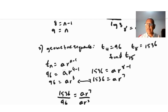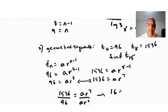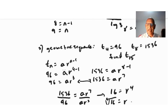The a terms cancel out. 1536 divided by 96 equals 16, and r^7 divided by r^3 is r^4. So 16 = r^4, which means r = the fourth root of 16. Using a calculator, the fourth root of 16 equals 2, so r = 2.